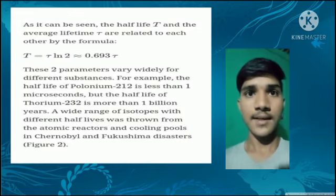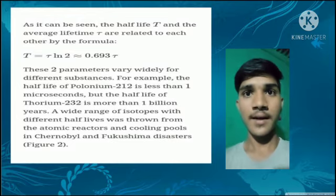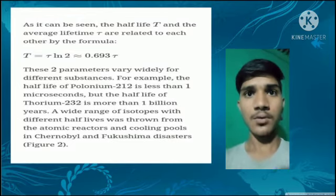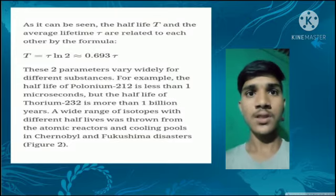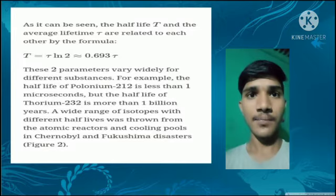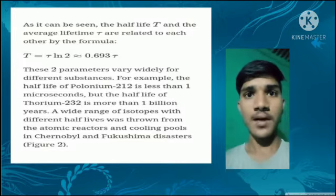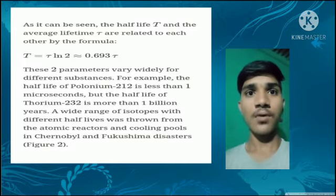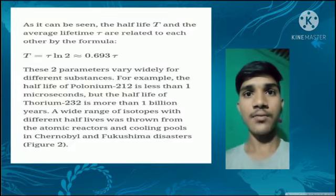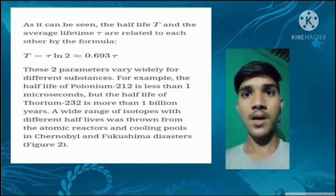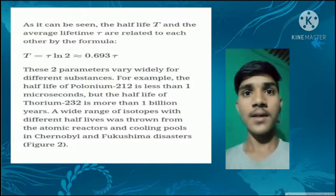As it can be seen, the half-life T and the average lifetime tau are related to each other by the formula: T = tau × ln(2) ≈ 0.693 × tau. These two parameters vary widely for different substances. For example, the half-life of Polonium-212 is less than 1 microsecond, but the half-life of Thorium-232 is more than 1 billion years.